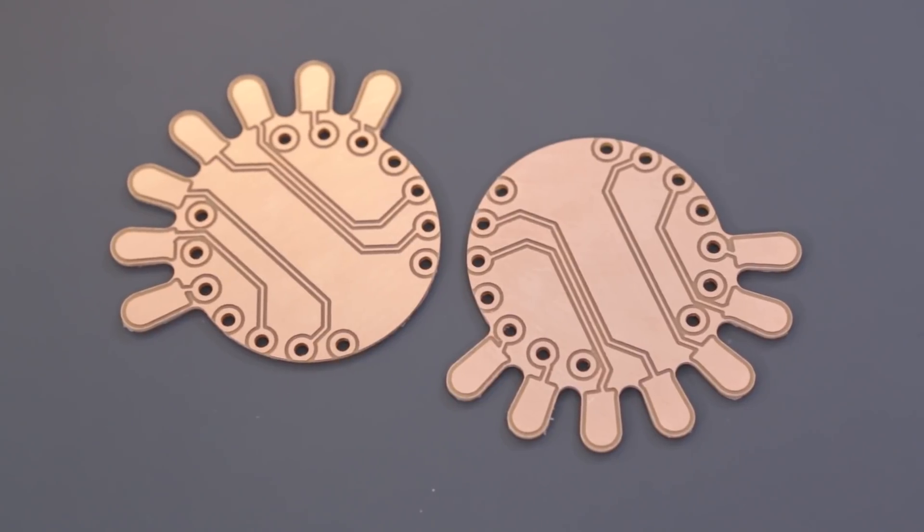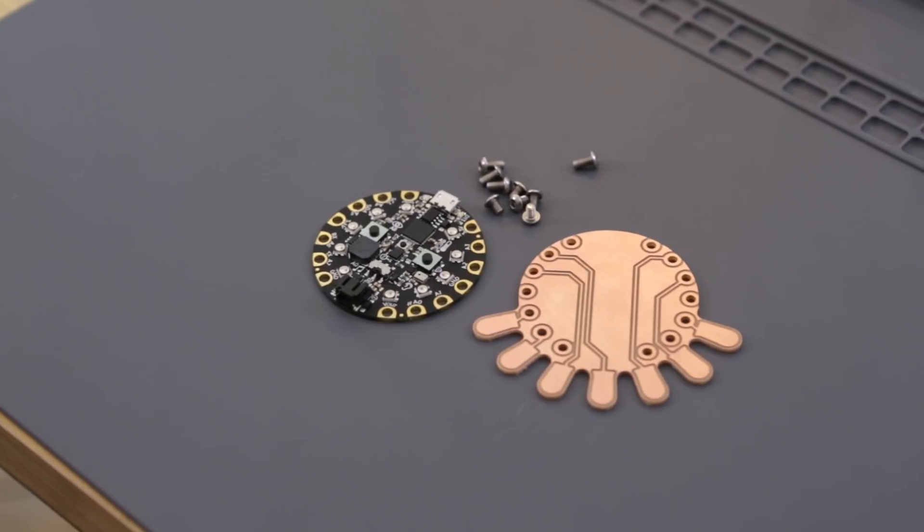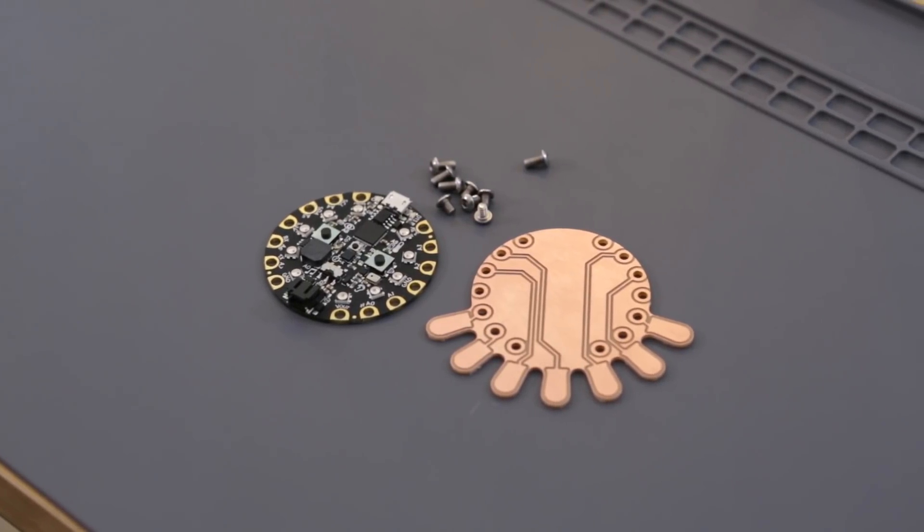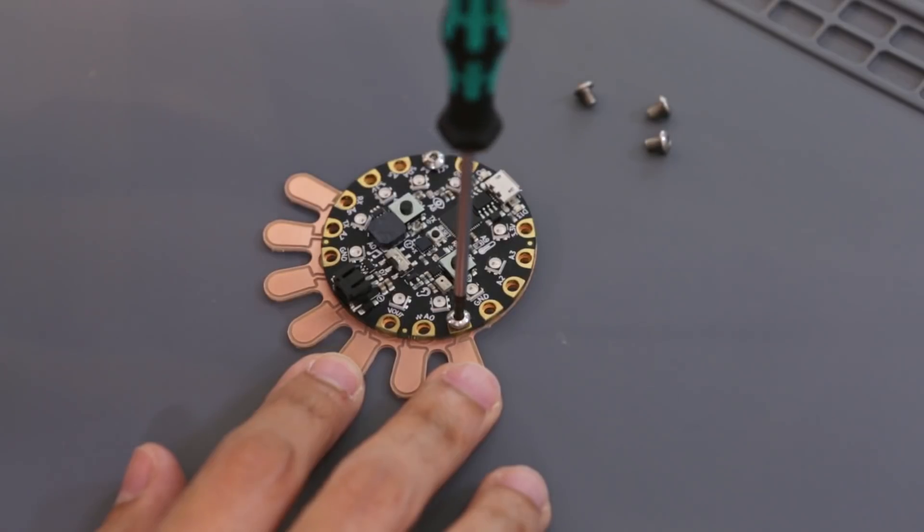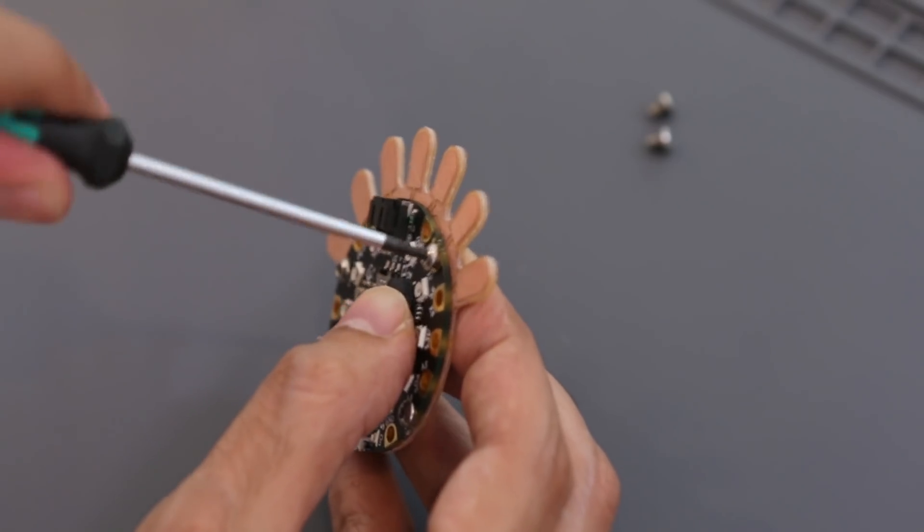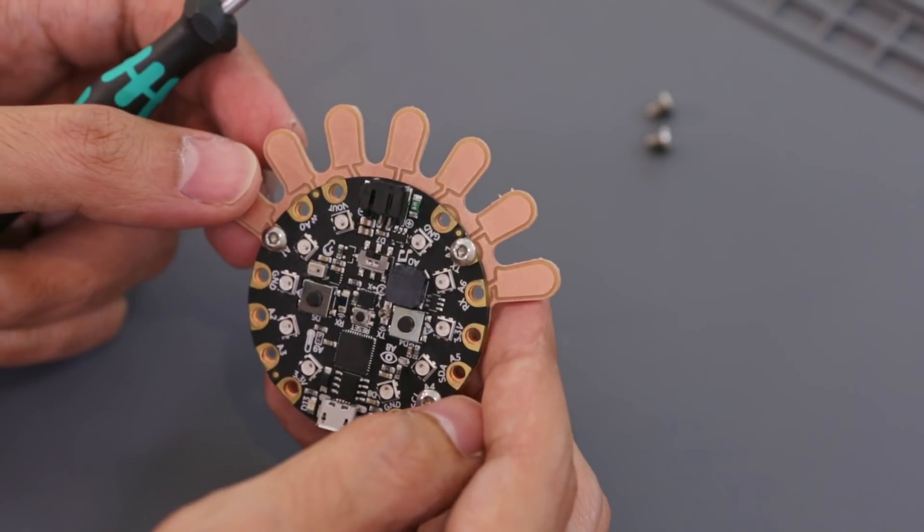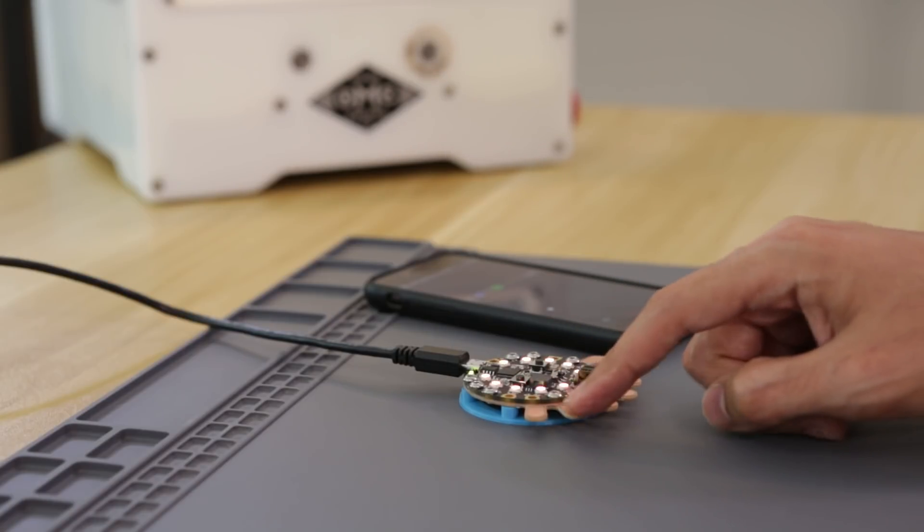We used hardware screws to mechanically hold the two boards together. These M3 screws and nuts are electrically conductive so they'll bridge our connections. If you like this project be sure to check it out on the Adafruit Learning System. Thanks so much for watching and don't forget to subscribe for more projects from Adafruit.